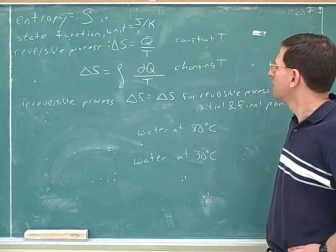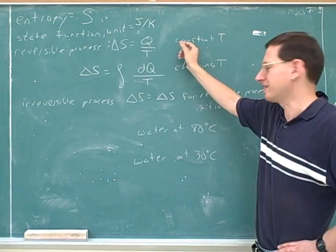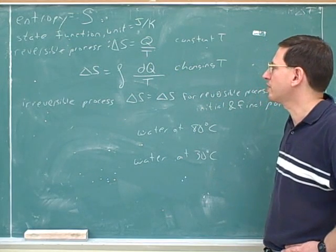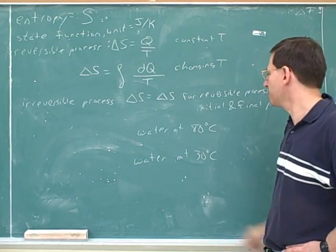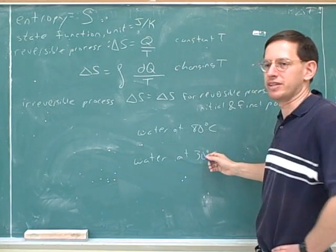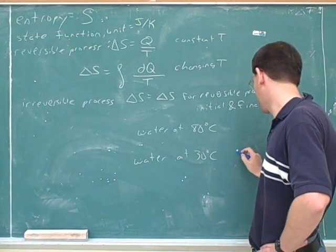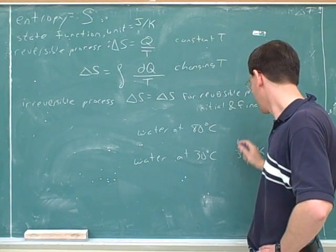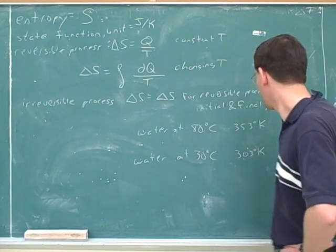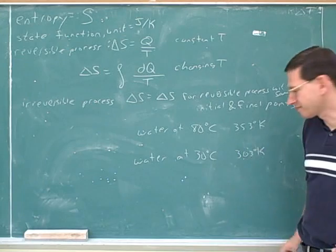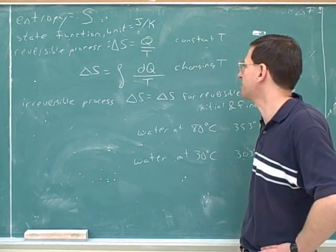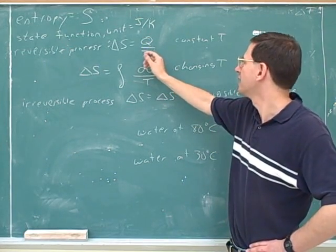Now we have a problem because the constant-temperature formula doesn't seem to apply — the whole point here is that the temperature is changing. There are two approaches. One is you can just do an approximation: the temperature is changing, but if you think about these in kelvins, the temperature change is not really very big. This is like 303 Kelvin and 353 Kelvin. So the approximate approach is to plug in the average or middle temperature for T.